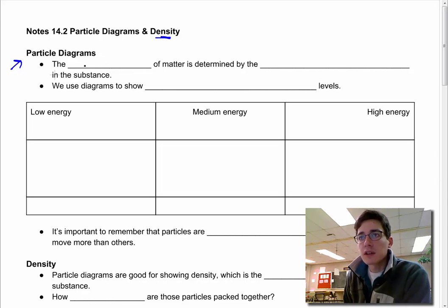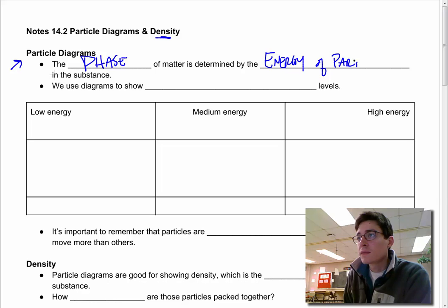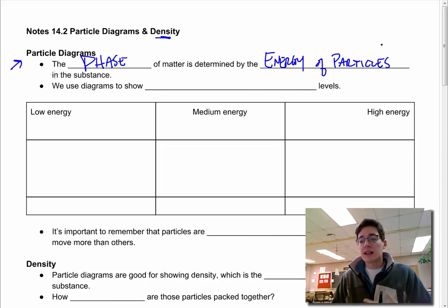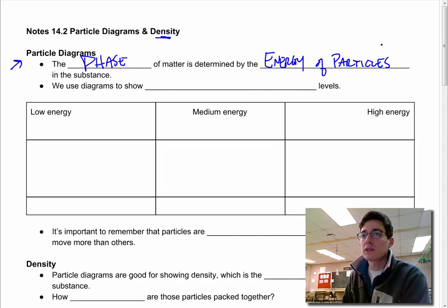Particle diagrams are really helpful because they help us describe what matter is doing. The first thing we need to know is that the phase of matter, so solid liquid gas, is determined by the energy of particles in that substance. All of my substances, all matter, has energy. And depending on how much energy there is, what quantity of energy there is, that determines what phase of matter I'm in. We use particle diagrams to show those relative energy levels.